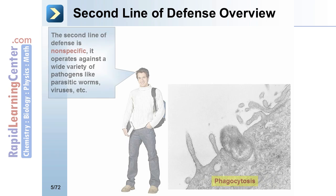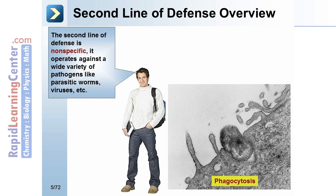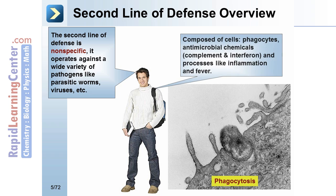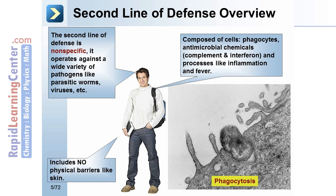Second line of defense overview. The second line of defense is nonspecific. It operates against a wide variety of pathogens, like parasitic worms, viruses, etc. It is composed of cells, phagocytes, anti-microbial chemicals, complement, interferon, and processes like inflammation and fever. The second line of defense includes no physical barriers, like the skin.